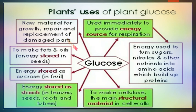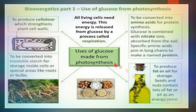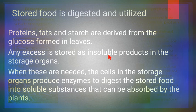To summarize: glucose is used for growth, to make fats and oils, to make sucrose stored in fruits, and to form starch stored in roots and storage organs. Glucose made by photosynthesis is stored in roots and storage organs as starch, used to make cell walls as cellulose, used to make fats and oils, and used to make amino acids and proteins.